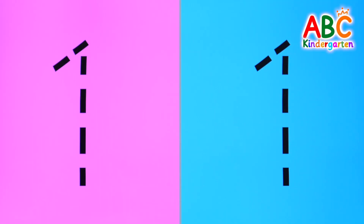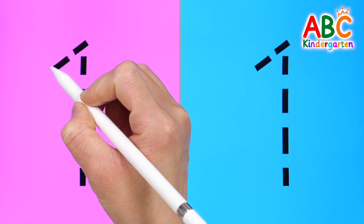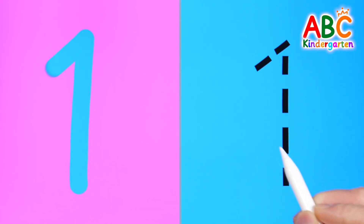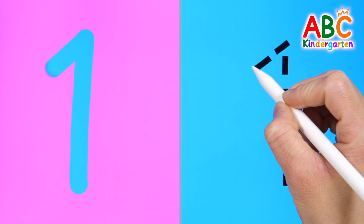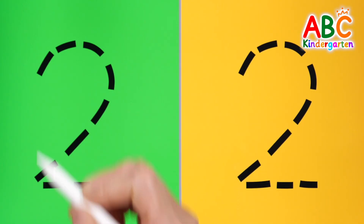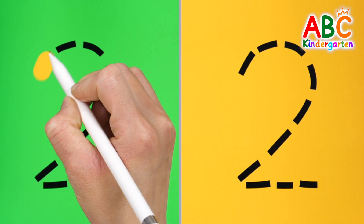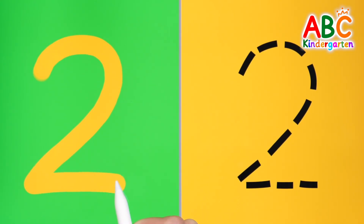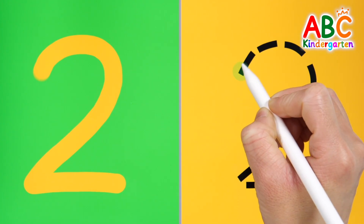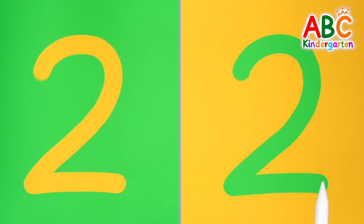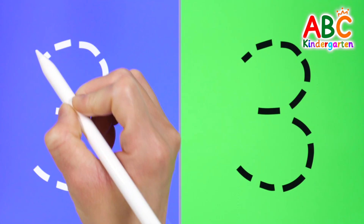Let's write each number twice and read it together. One. One. Two. Three.